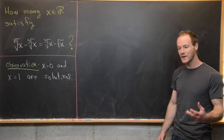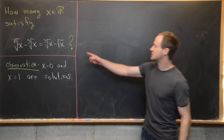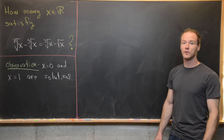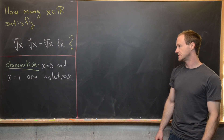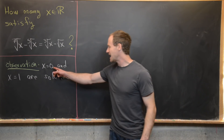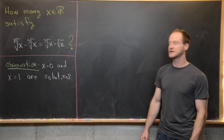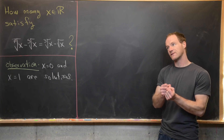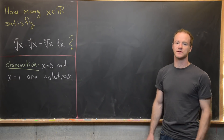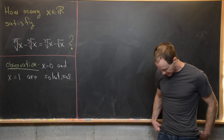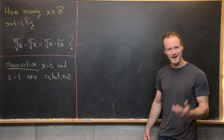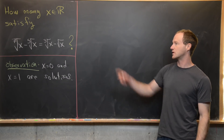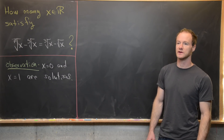Our real goal is to find out if there are any other solutions. The way we'd like to do that is to transform this into a polynomial equation that preserves x equals 0 and x equals 1 as solutions and also allows us to factor those solutions out. Let's see what kind of change of variables we could do.